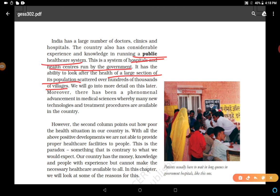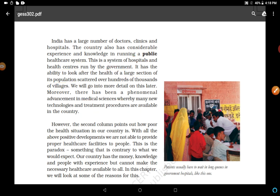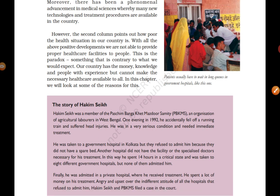When we think about public healthcare, we think about government hospitals. However, the second column points out how poor the health situation in our country still is. With all these positive developments, we are not able to provide proper healthcare facilities to all people. This is the paradox — something contrary to what we would expect. Our country has the money, knowledge, and experienced people but cannot make necessary healthcare available to all. In this chapter, we will look at some of the reasons for this.